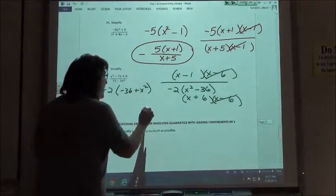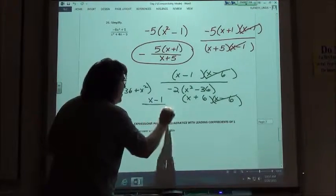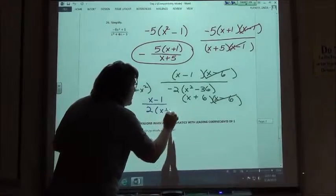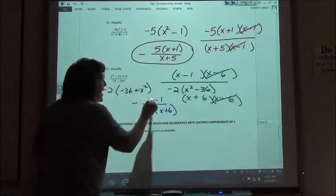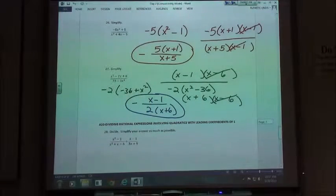So my answer, I'm going to write it here in blue. We're going to have x minus 1 on top. We have negative 2 times x plus 6. Again, they'll probably put the negative in front instead of in front of the 2. It really shouldn't make any difference, but my answer should look something sort of like that.